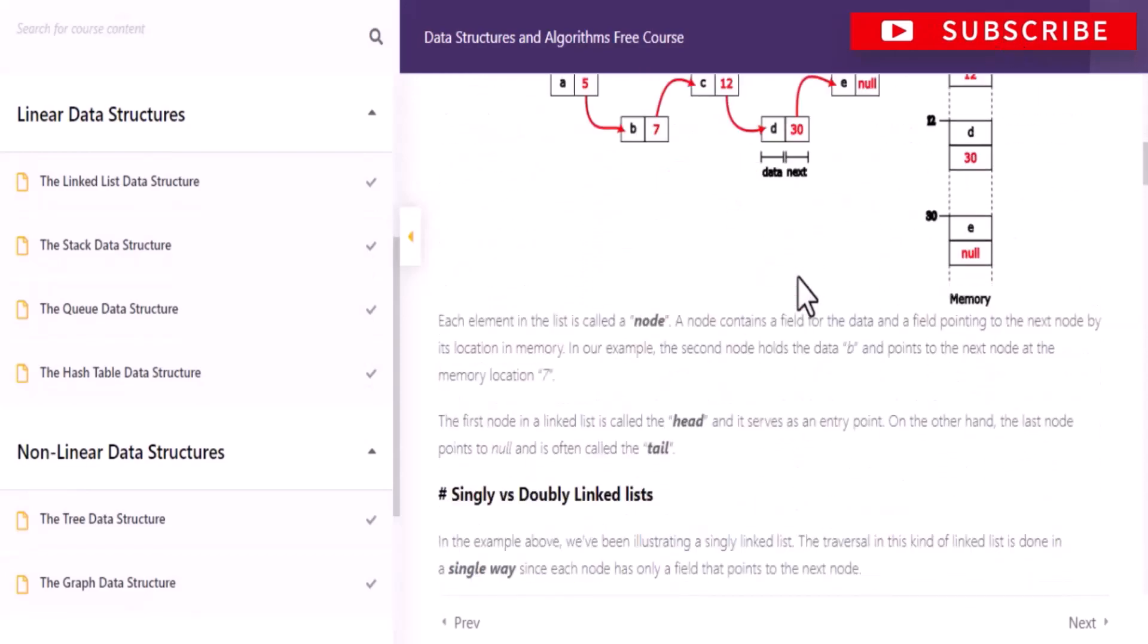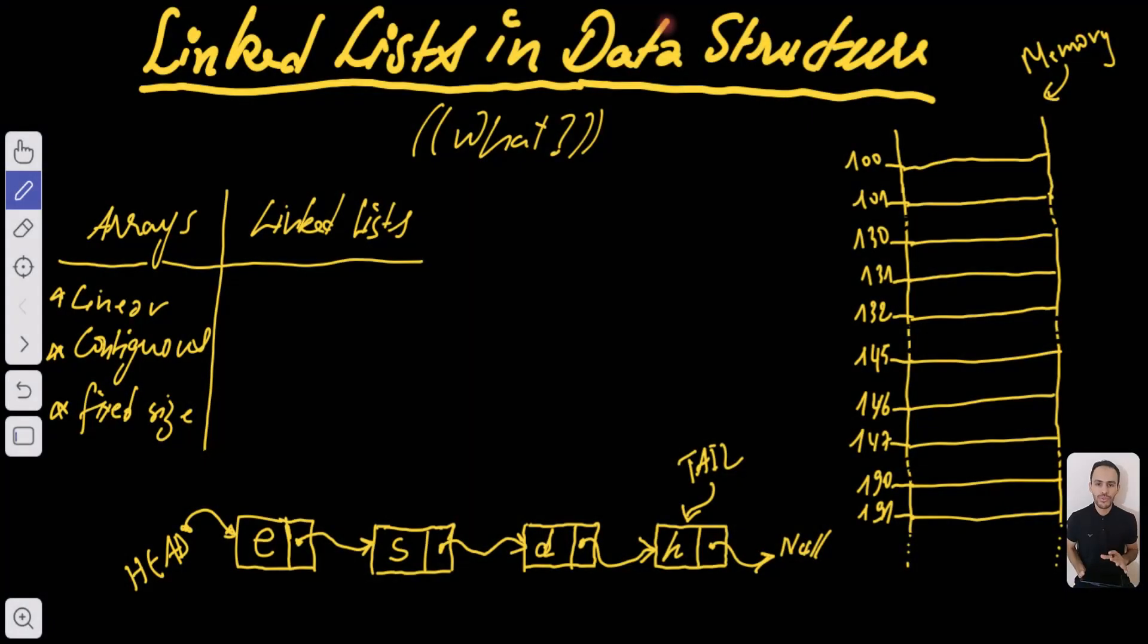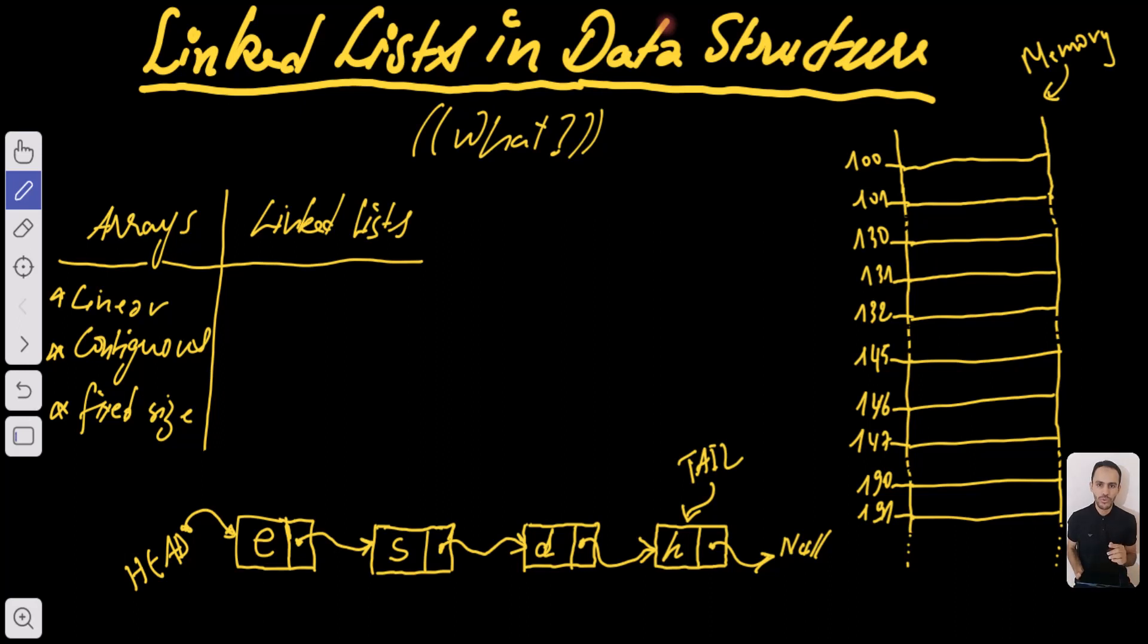The first thing that we're going to start with is to explain what are linked lists and in order to do that I want to make a comparison between arrays and linked lists that we have seen in the last video.